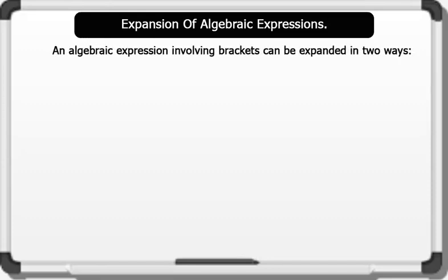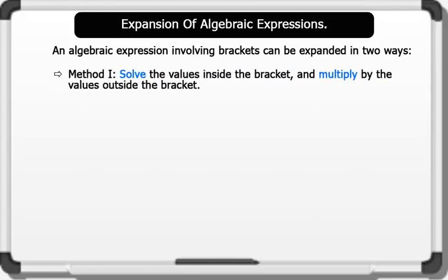Expansion of algebraic expressions. An algebraic expression involving brackets can be expanded in two ways. Method 1: solve the values inside the bracket and multiply by the value outside the bracket. Example: 2 bracket 3 plus 4 gives us 2 times 7, which equals 14.